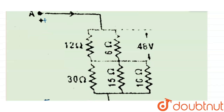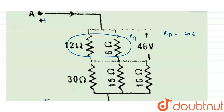As you can see, the 12 ohm and 6 ohm resistors are in parallel. So the net resistance of these two will be Rp1. Rp1 equals 12 × 6 divided by 12 + 6, using the parallel resistance formula. R1 is 12 ohm and R2 is 6 ohm. So the value of Rp1 comes out to be 4 ohm.